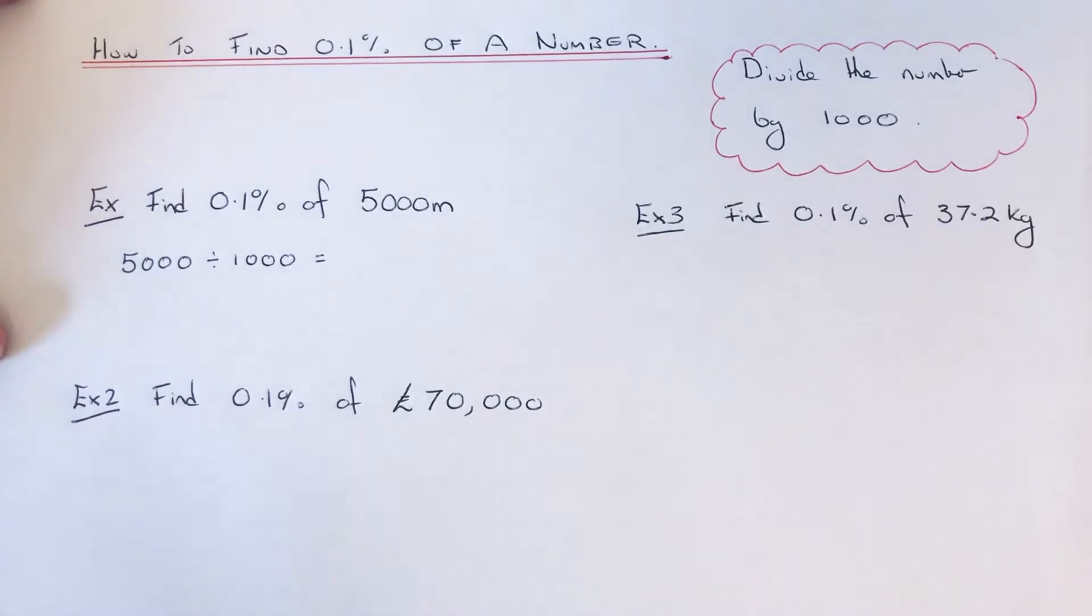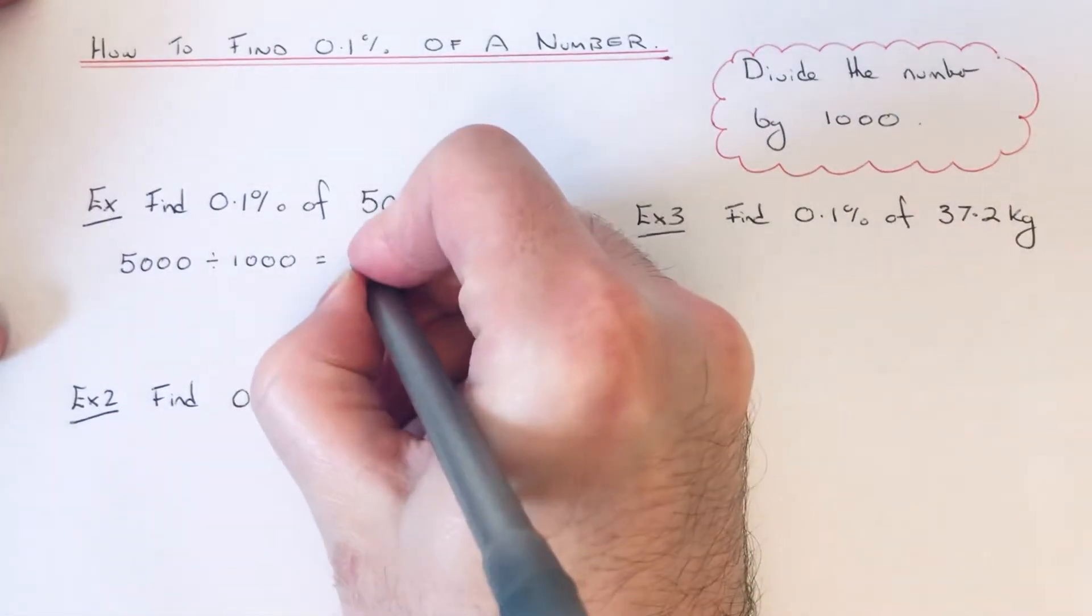1,000 goes into 5,000 five times, so it would be 5 metres.